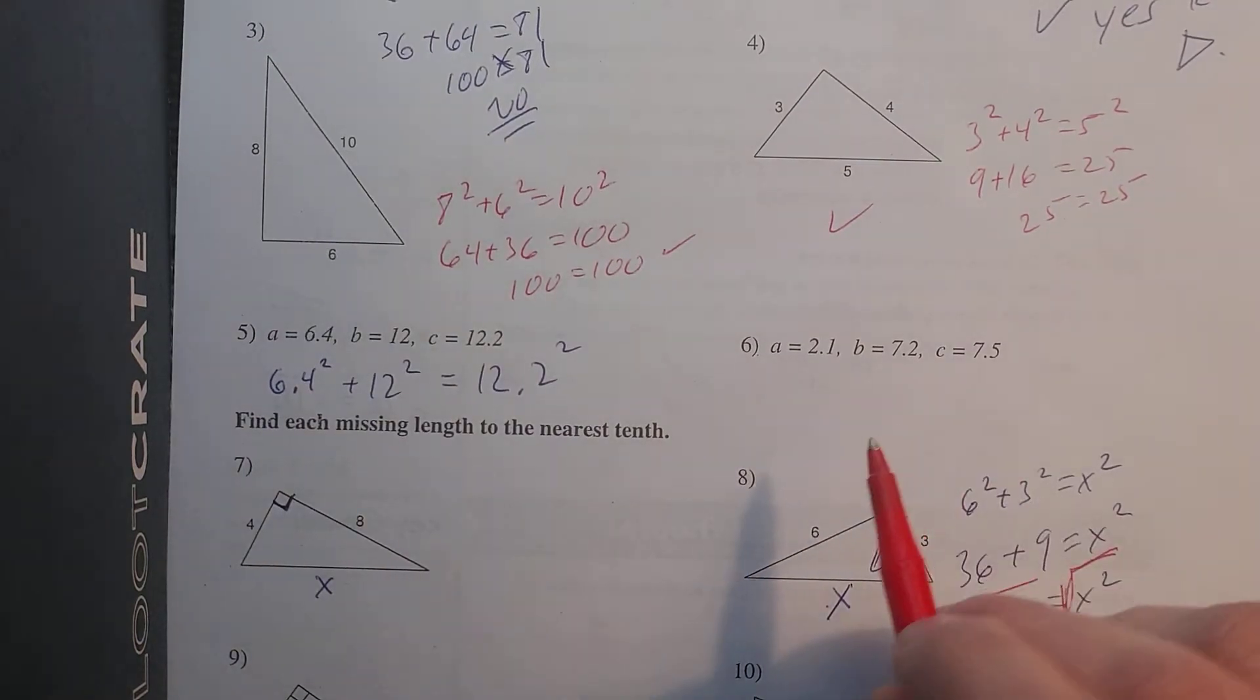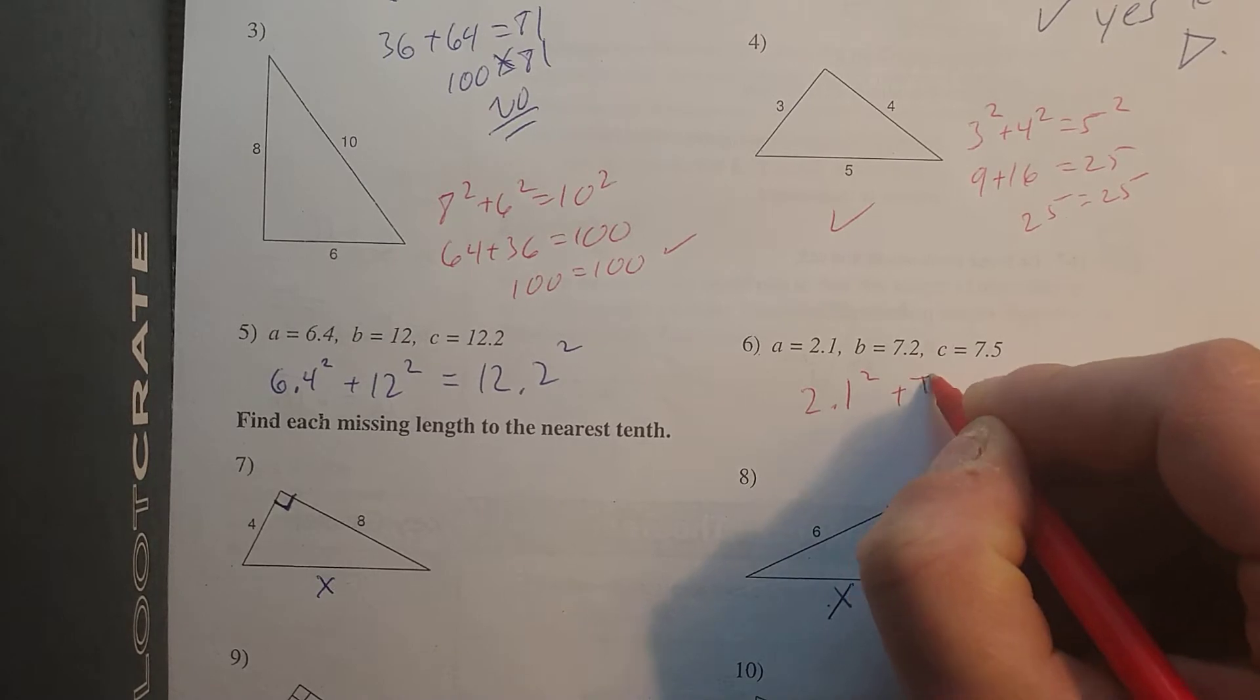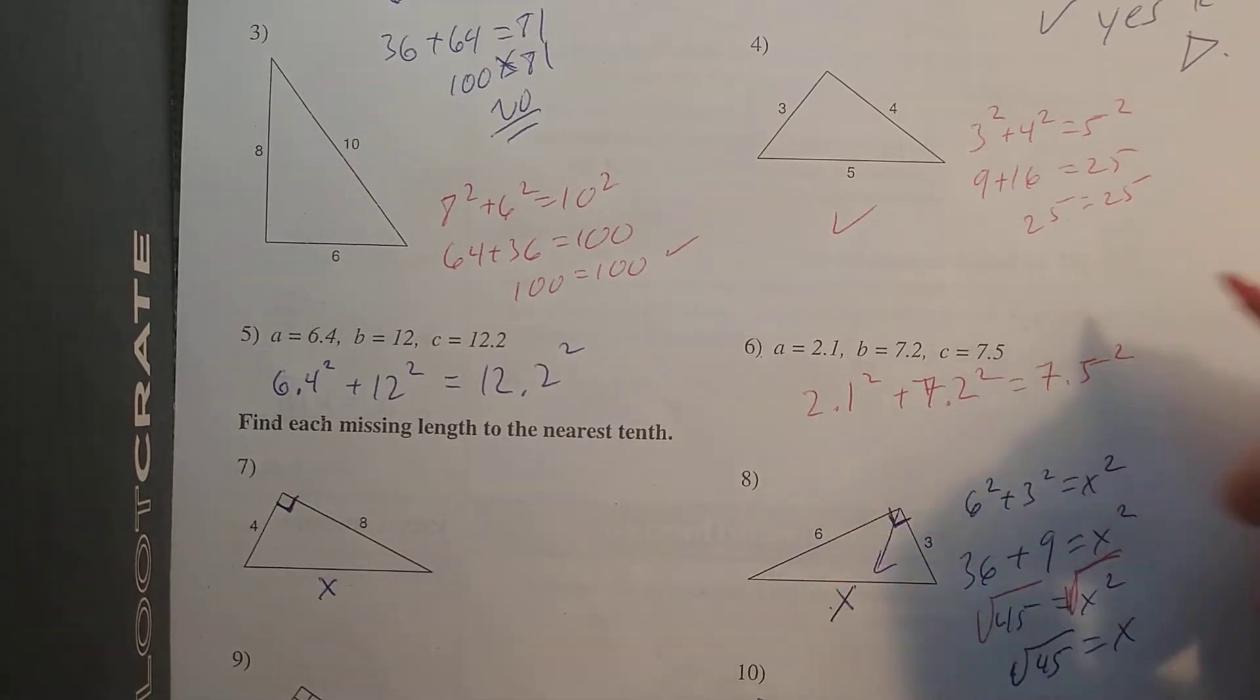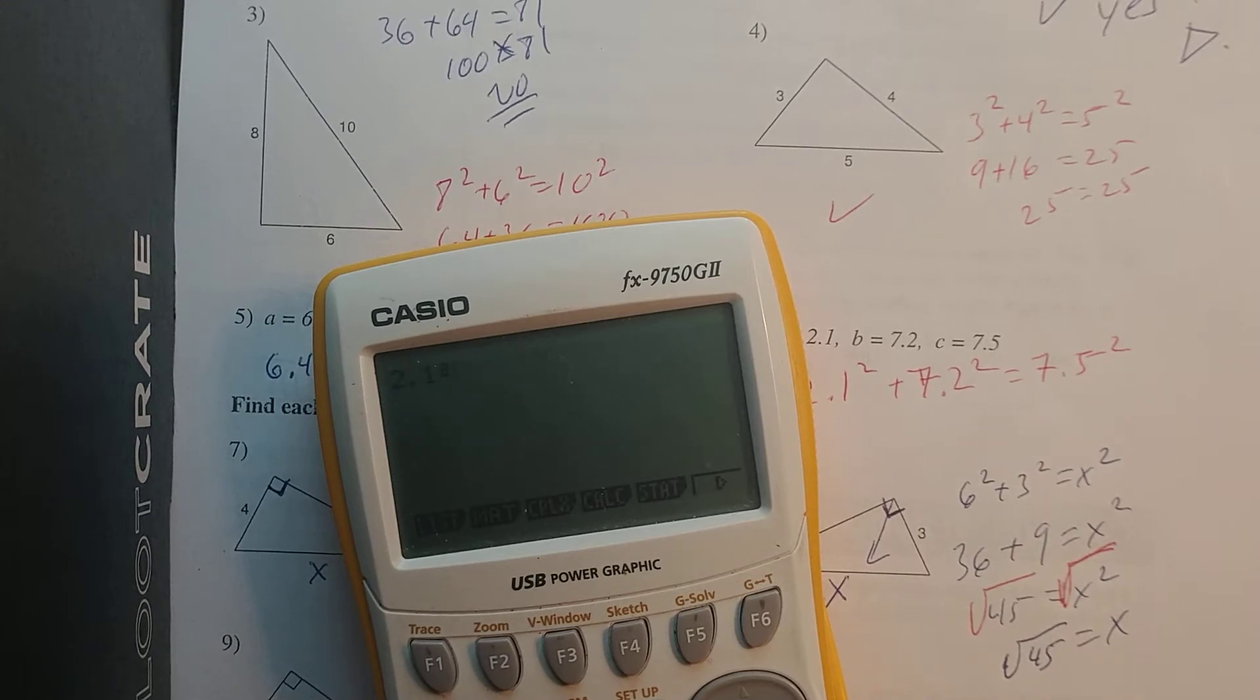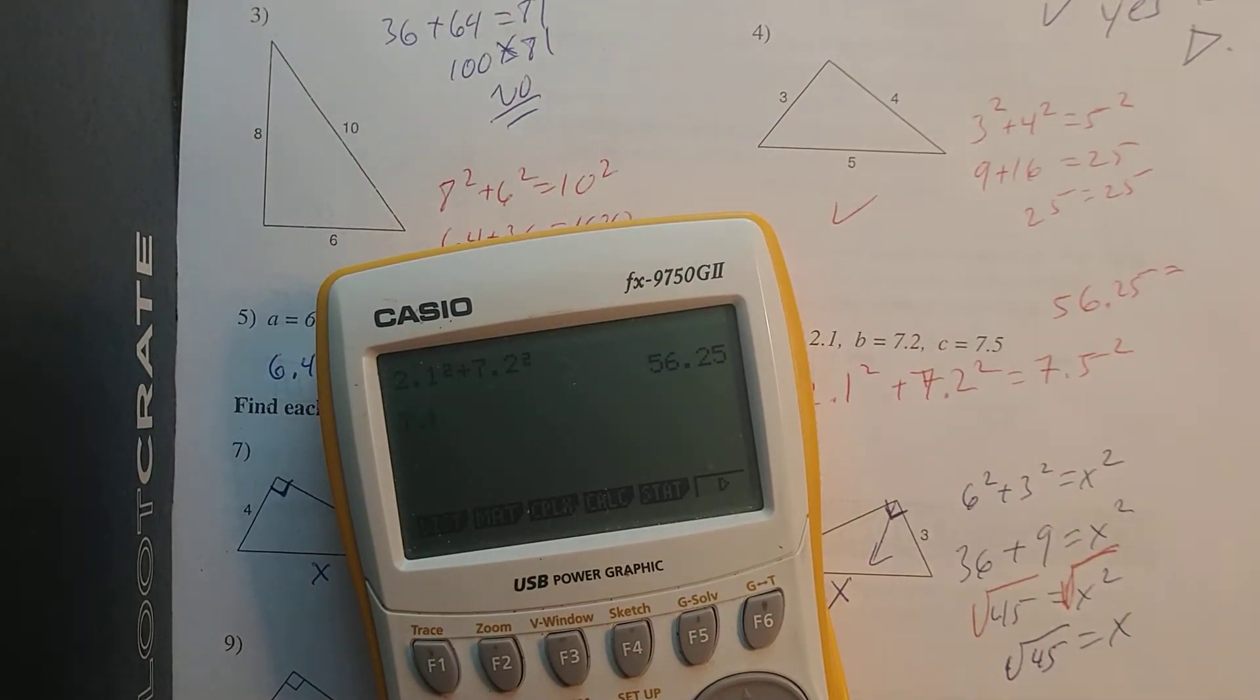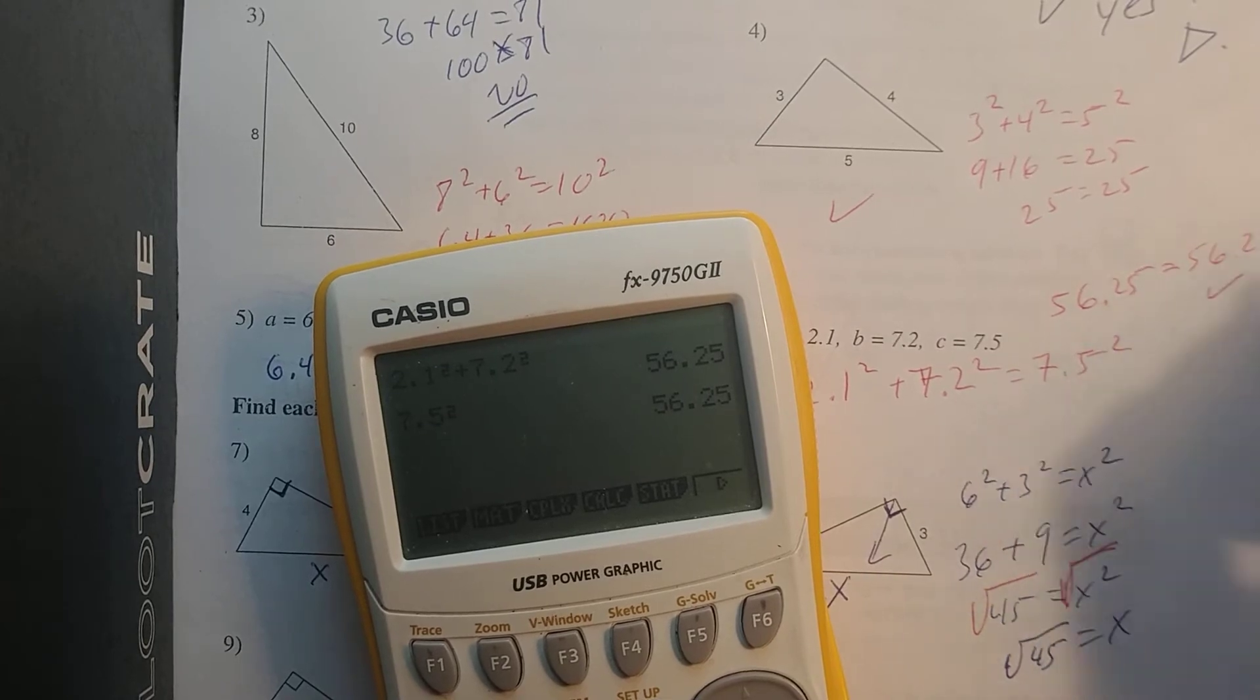For number six, the setup is going to be 2.1² + 7.2² = 7.5². And for this one I am going to use a calculator. So that's 2.1² + 7.2², and that's 56.25 equals 7.5². 56.25. All of these are working, so those are yes.